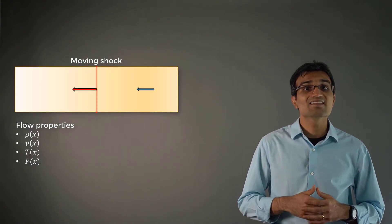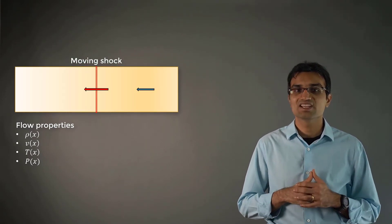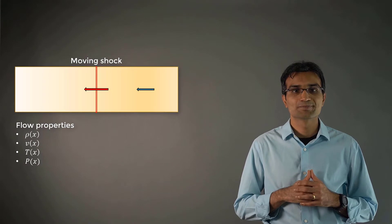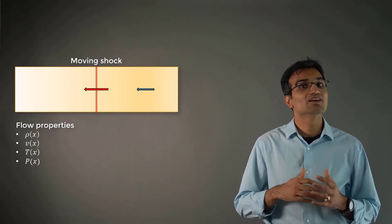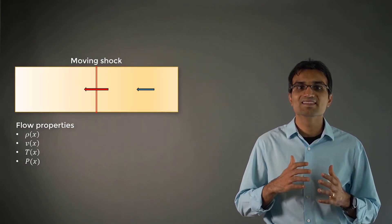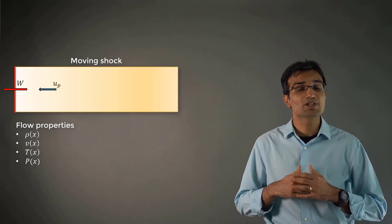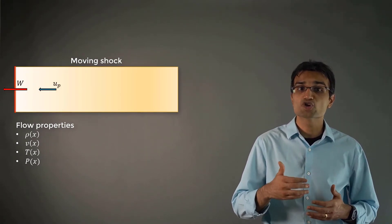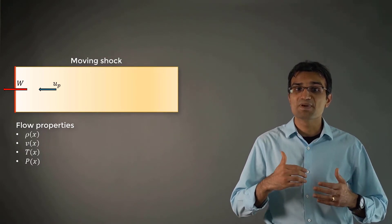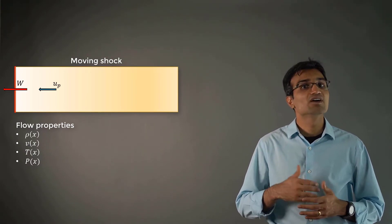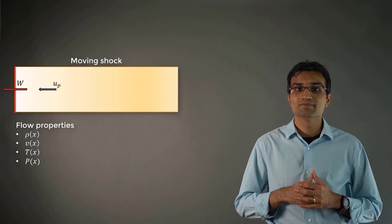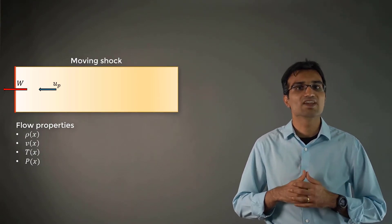Now, let's say the shock wave is no longer stationary in the object's frame of reference and that it's propagating through space. In this case, as the shock wave moves through space at a speed W, it induces motion into the gas behind it, causing it to move with a velocity UP in the same direction of the wave.